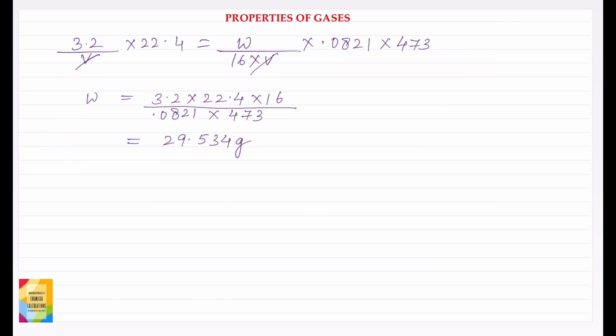We'll put the values. Therefore, 3.2 divided by V times 22.4 is equal to W times 0.0821 times 473 divided by 16 times V. V and V will cancel out.